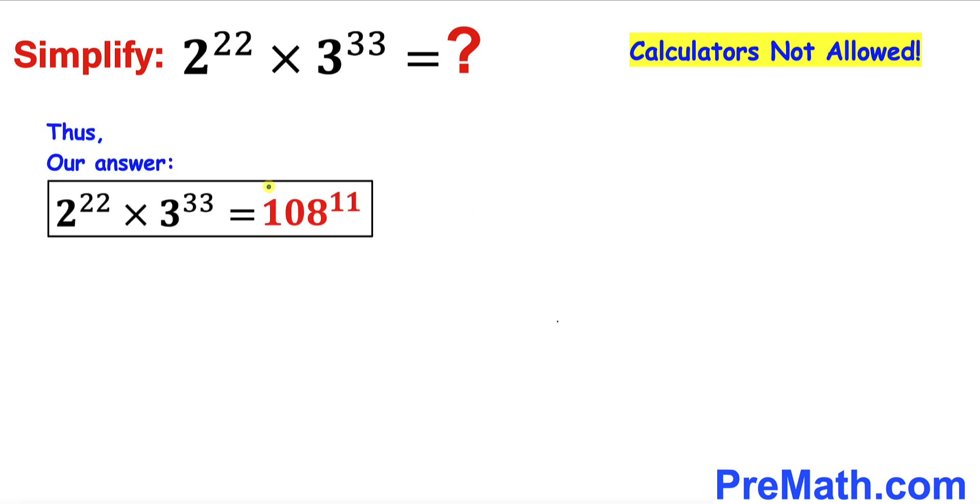So thus after all the calculations and manipulations, the simplified answer to our this given problem 2 power 22 times 3 power 33 turns out to be 108 power 11. And that's our final answer. Thanks for watching and please don't forget to subscribe to my channel for more exciting videos.